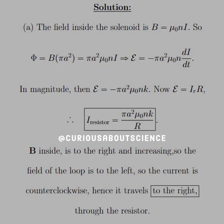The EMF, from Faraday's Law, is negative d/dt of the flux. The only thing that's time-dependent in this flux is the current, so we have negative pi A squared mu-naught n dI/dt. We want the negative sign there — it restores the flux generated by increasing the current, thanks to Lenz's Law. So in magnitude, E is just equal to pi A squared mu-naught nK.